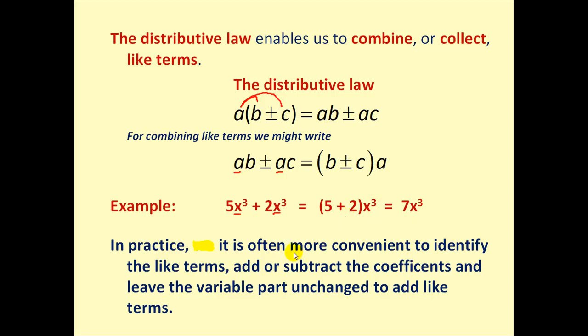But in practice, it is often more convenient to identify the like terms and then add or subtract the coefficients and leave the variable part unchanged. So notice how if we identify these as like terms, we can just add 5 and 2 to get 7x cubed.